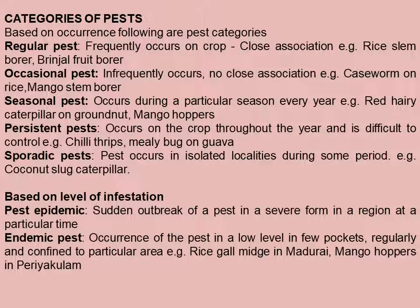Based on level of infestation, pests may be epidemic — a sudden outbreak of a pest in severe form in a region at a particular time — or endemic — occurrence of the pest at a low level in few pockets, regularly confined to a particular area. For example, the rice gall midge is very common in Madurai and mango hoppers in Periakulam. This was the second details on pest; further discussion will continue in the next talk.